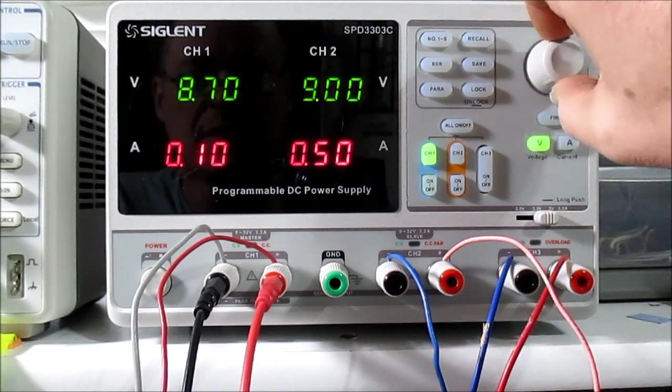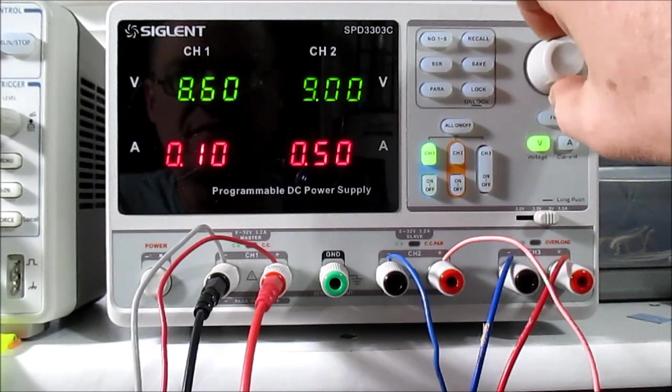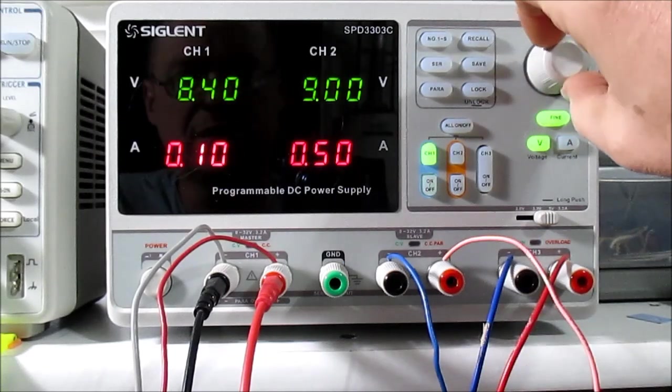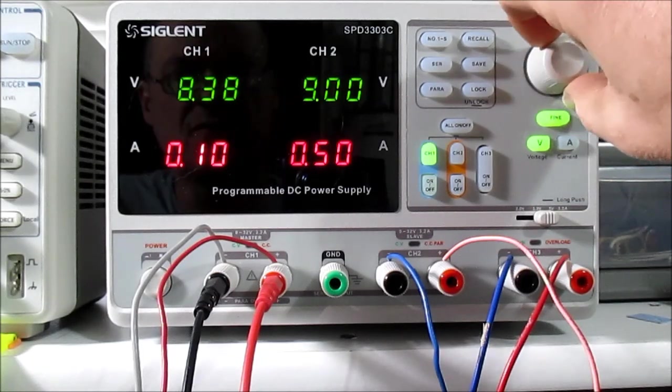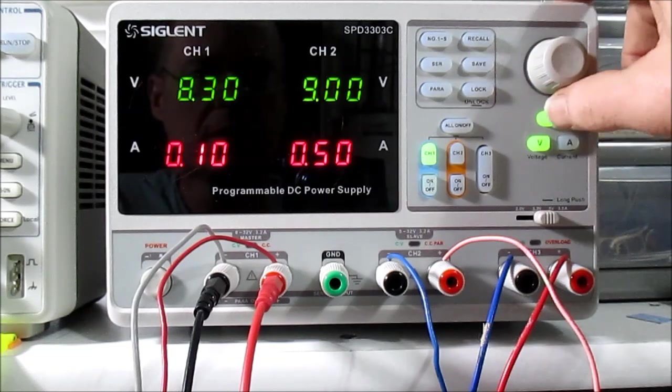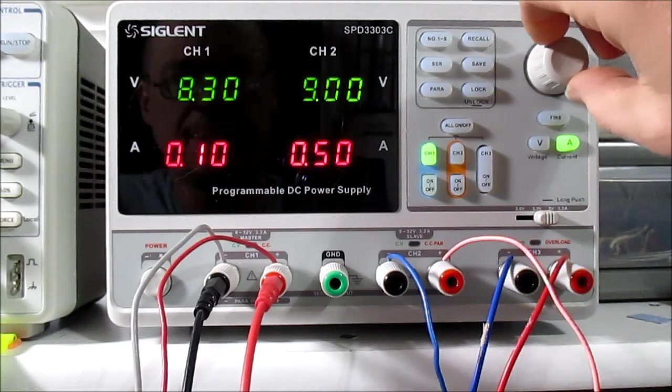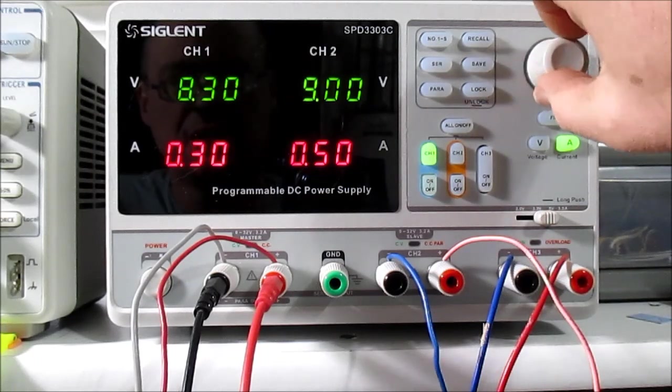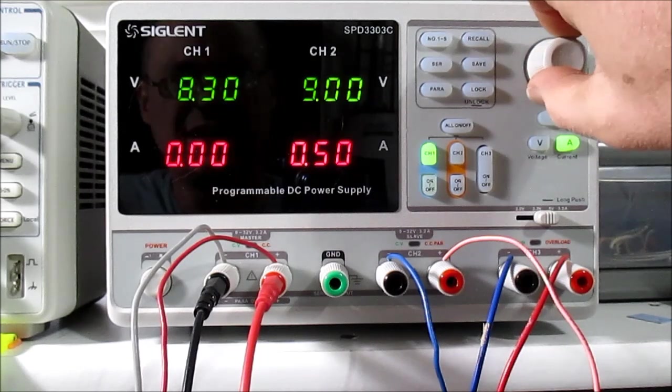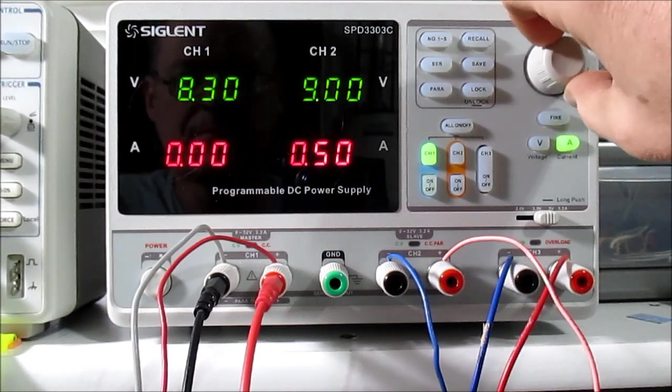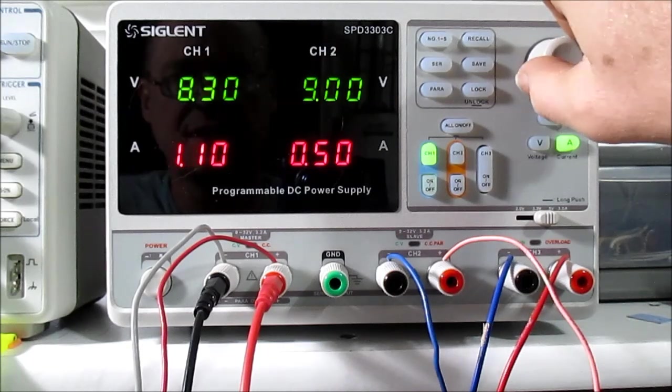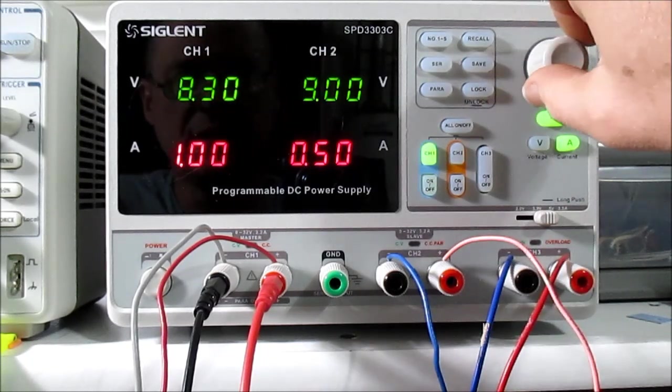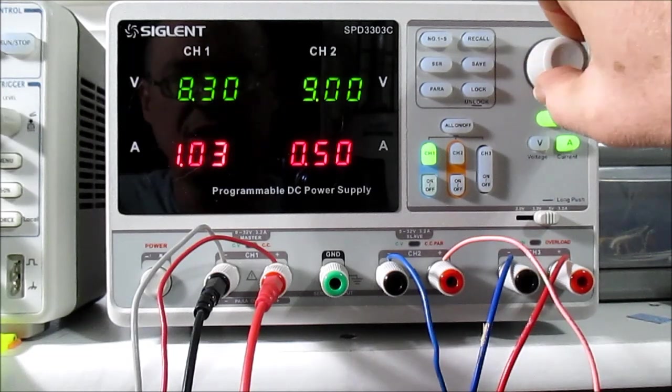And you can see the voltage will step by tenths of a volt. You can hit the Fine button and adjust by hundredths of a volt. And the same thing with current. You can adjust by tenths of an amp or hundred milliamp steps. And again, you can hit Fine and adjust by ten milliamp steps.